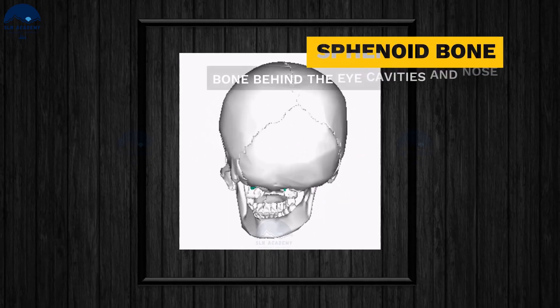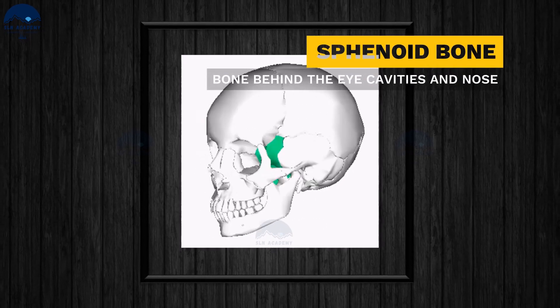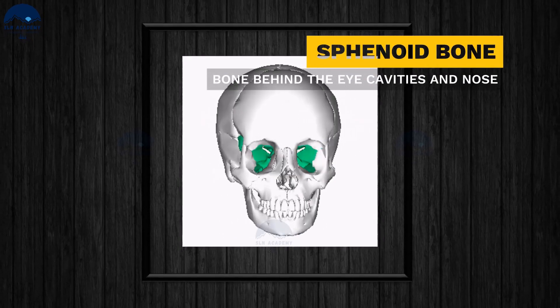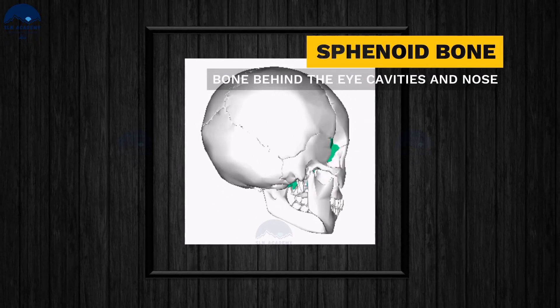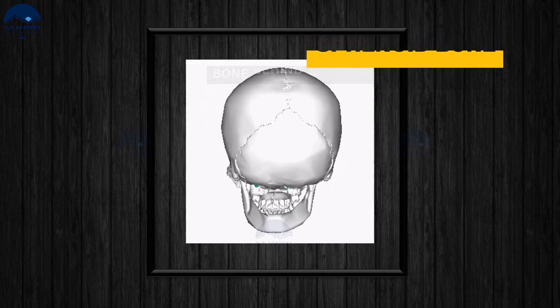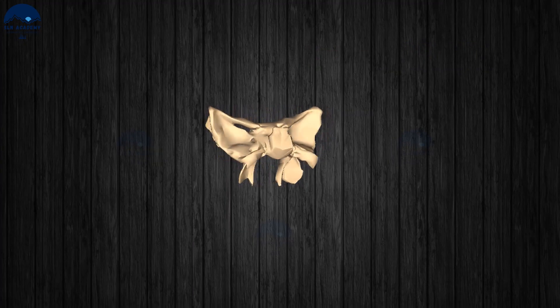Sphenoid bone. The sphenoid bone is located under the frontal bone, behind the eye cavities and the nose. It looks like a butterfly or bat with wings extended.